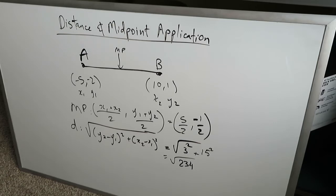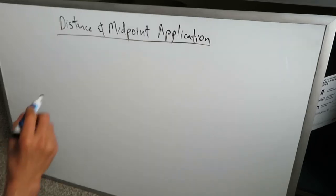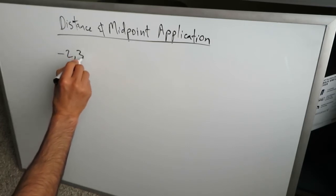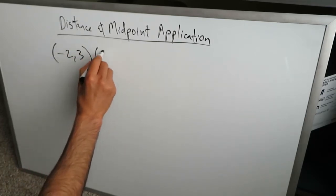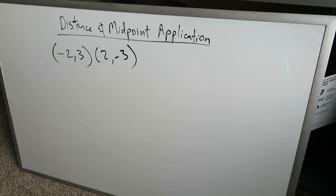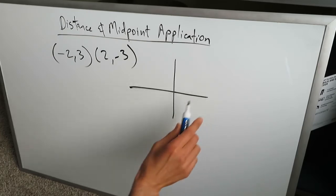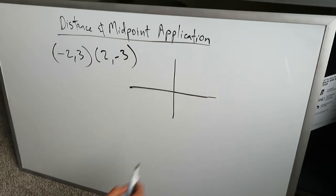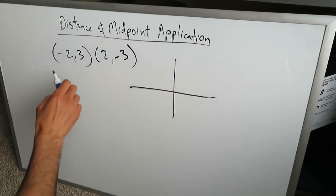So that's just the distance and midpoint review. Let's look at two examples. Let's look at two coordinate pairs: minus 2 comma 3, and 2 comma minus 3. These happen to be the endpoints of a diameter for a circle. Our goal here is to use the distance and midpoint application to determine the equation of a circle. This represents the endpoints of a circle diameter, and the diameter is a segment because it has a starting and an end point.